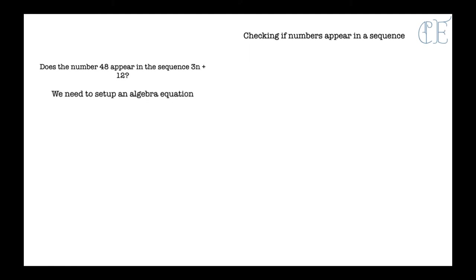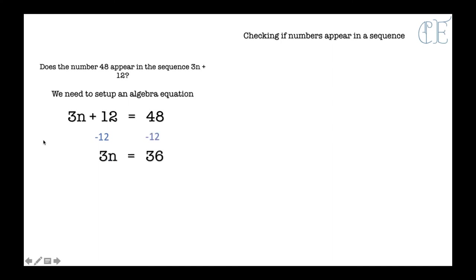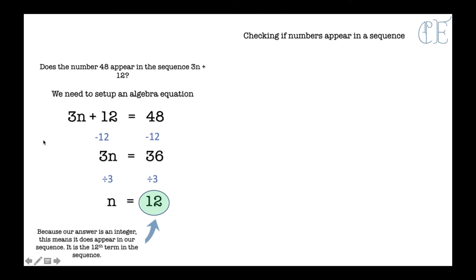We need to set up an algebra equation. So 3n + 12 is our nth term rule, and we make it equal to 48. Then we solve it like a normal equation: take away 12, leaving us with 3n = 36. Then divide by 3, leaving us with n = 12. Because n is a whole number, this means that 48 does appear in our sequence — it is the 12th term. So if they ask you does 48 appear, you do it this way and you know because it's a whole number. If it asks what is the 12th term, you can work out that it's 48.